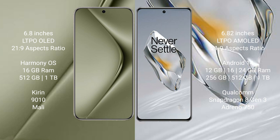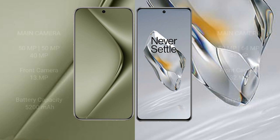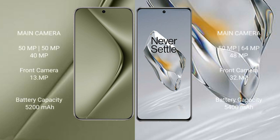The OnePlus 12 comes with 12GB, 16GB, or 24GB RAM and 256GB, 512GB, or 1TB internal storage, powered by the Snapdragon 8 Gen 3 processor and Adreno GPU.